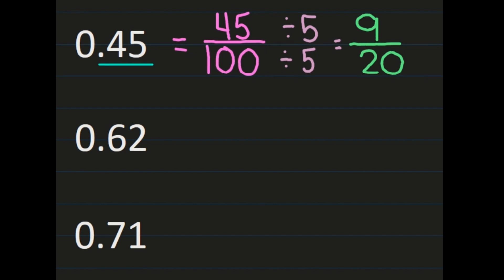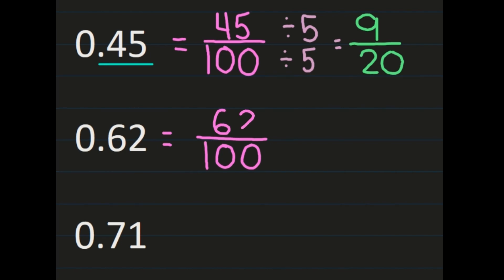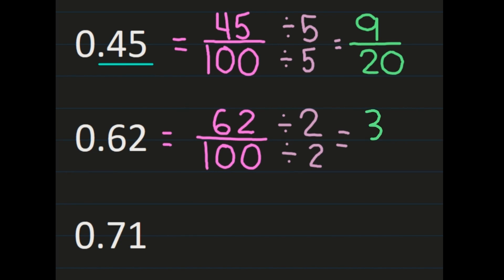The next example is 62 hundredths. That final digit is in the hundredths place, so the denominator is 100, and 62 is the numerator — just like it sounds. 62 hundredths does share a common factor of 2, so we simplify: 62 divided by 2 is 31, and 100 divided by 2 is 50. So 62 hundredths is equal to 31 fiftieths.